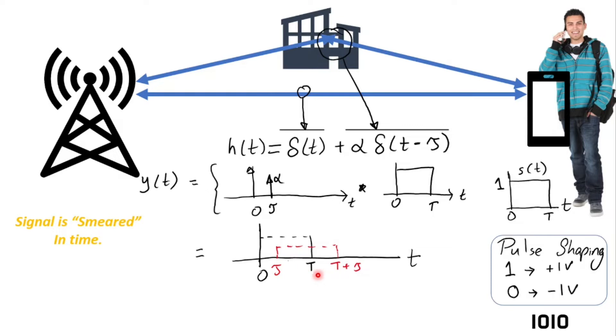Hence because of delay the signal is smeared. The signal is now also projected beyond its allocated time t. Note that the time slots beyond t are for other pulses. Hence the present signal will cause an interference with the subsequent symbols. This phenomenon is called inter-symbol interference and it is not a desired phenomenon.